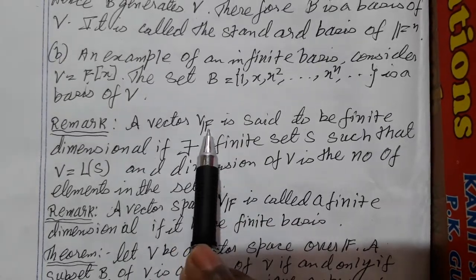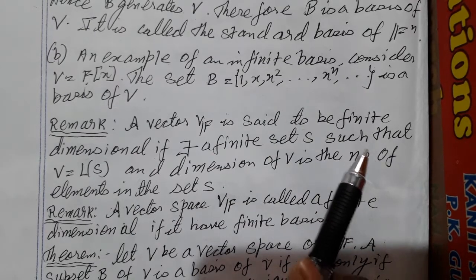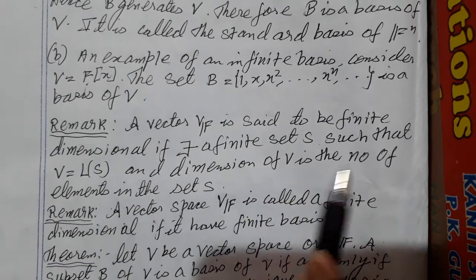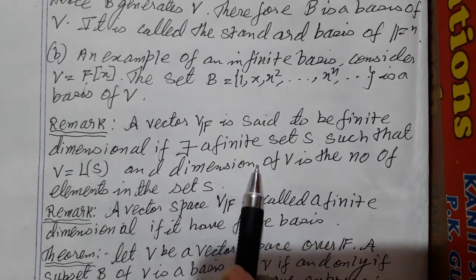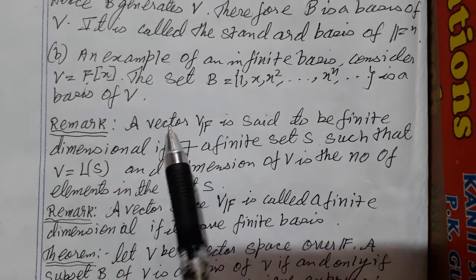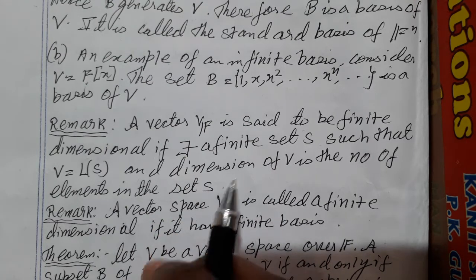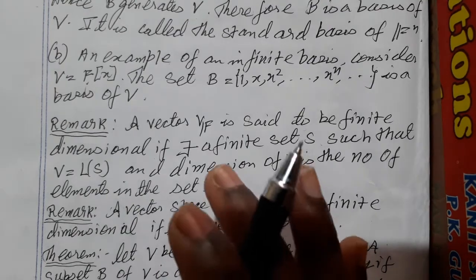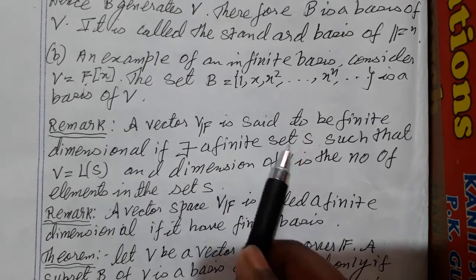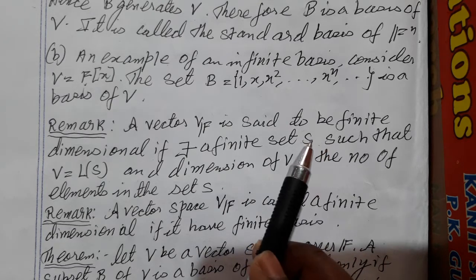Remark one: a vector space V over the field F is said to be finite dimensional if there exists a finite set S such that the linear span of S is equal to the whole vector space. The dimension of V is the number of elements in S. So remark one states that a vector space is finite dimensional if we can find a subset S of V which is finite, linearly independent, and capable of spanning the whole vector space — that S is the basis, and the number of elements in S is the dimension of the vector space.